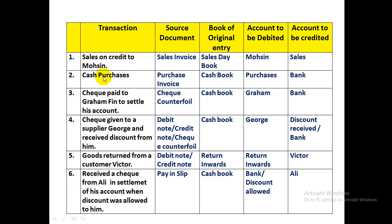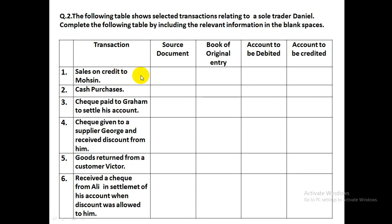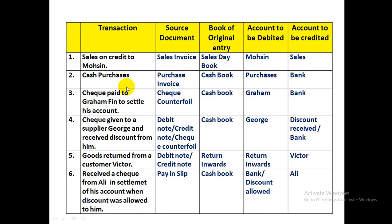Transaction 2: Cash Purchases. In the purchases journal, only credit purchases of goods are recorded. Because these are cash purchases, they will be recorded in the cash book. The source document is the purchase invoice. The accounts are: purchases debited, and cash or bank credited — bank if payment is by check, cash if payment is made in cash.